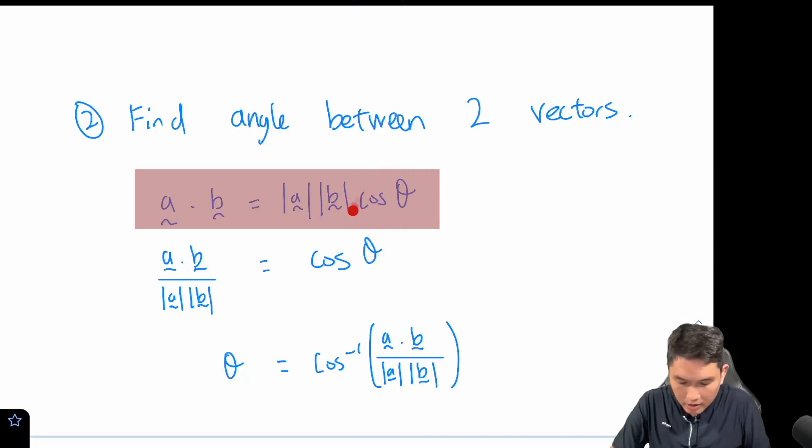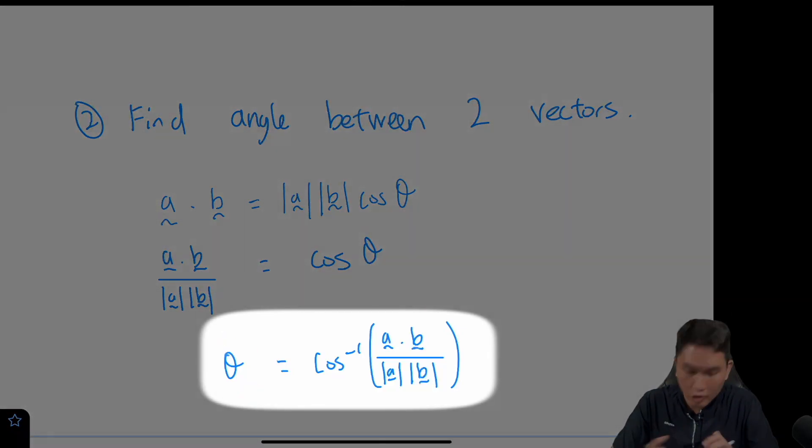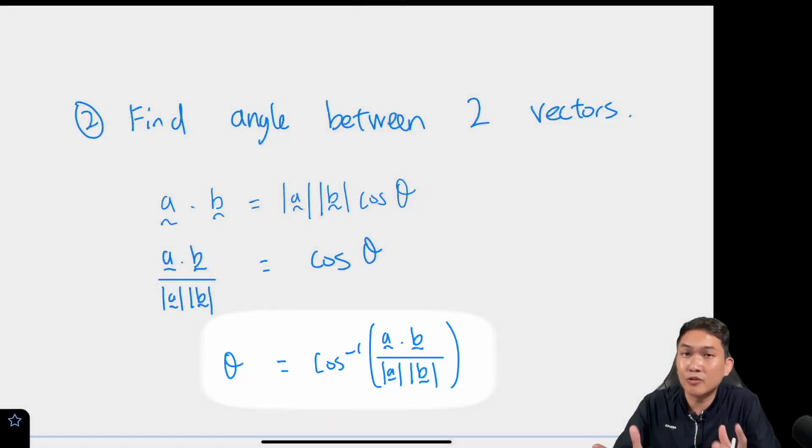From here I'm going to attempt to make cosine theta the subject of the formula, which means I'm going to divide both sides by mod a mod b. Then I'm going to do cosine inverse on both sides and make theta the subject of the formula, which means the angle between the two vectors is going to be cosine inverse of a dot b over mod a mod b.